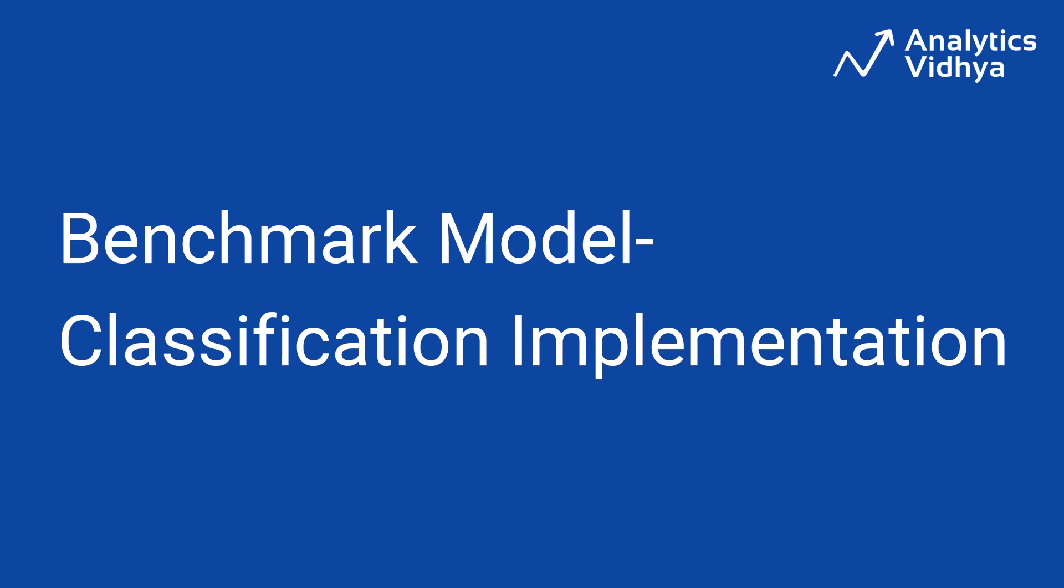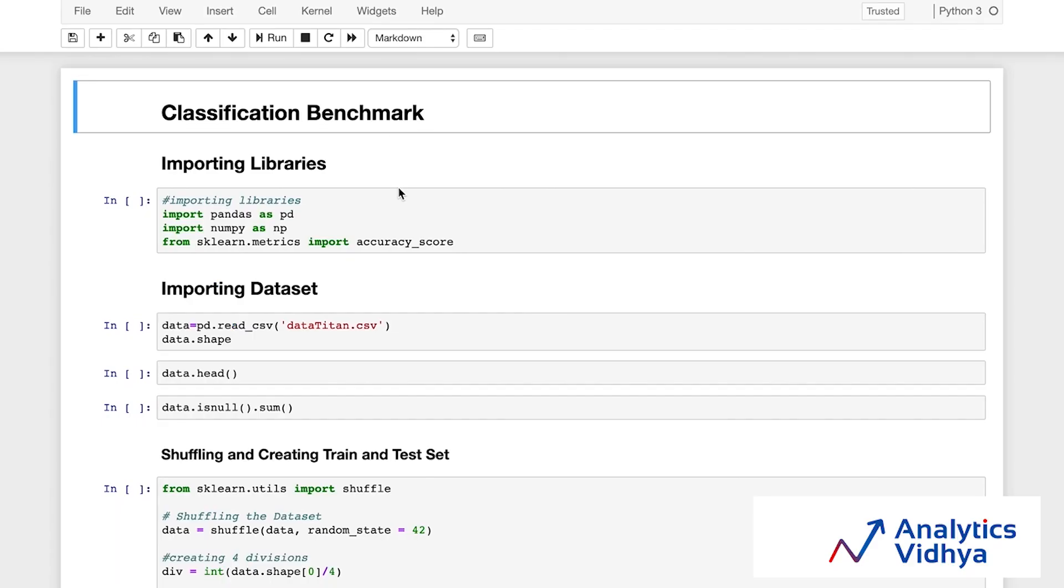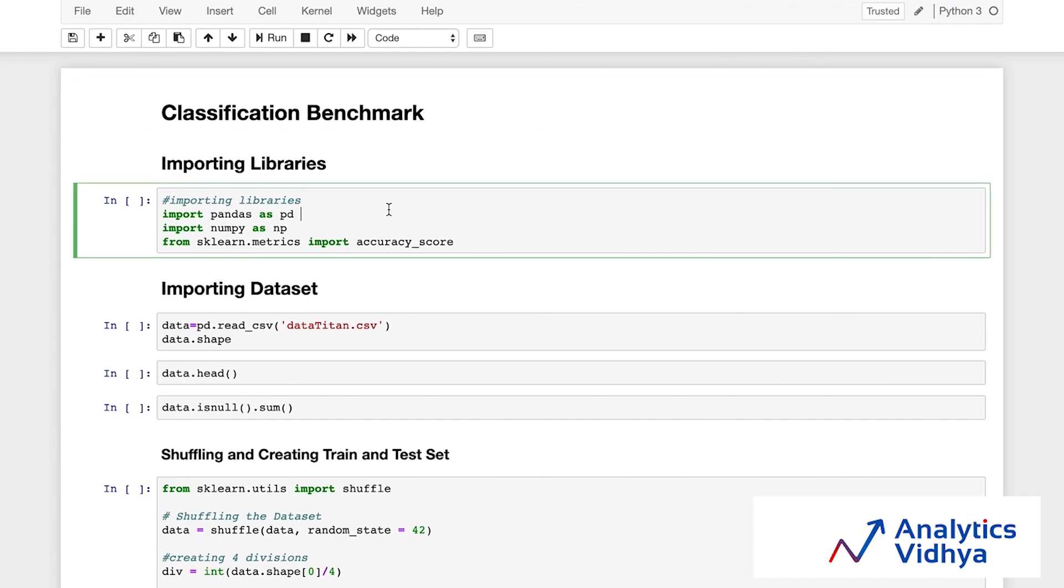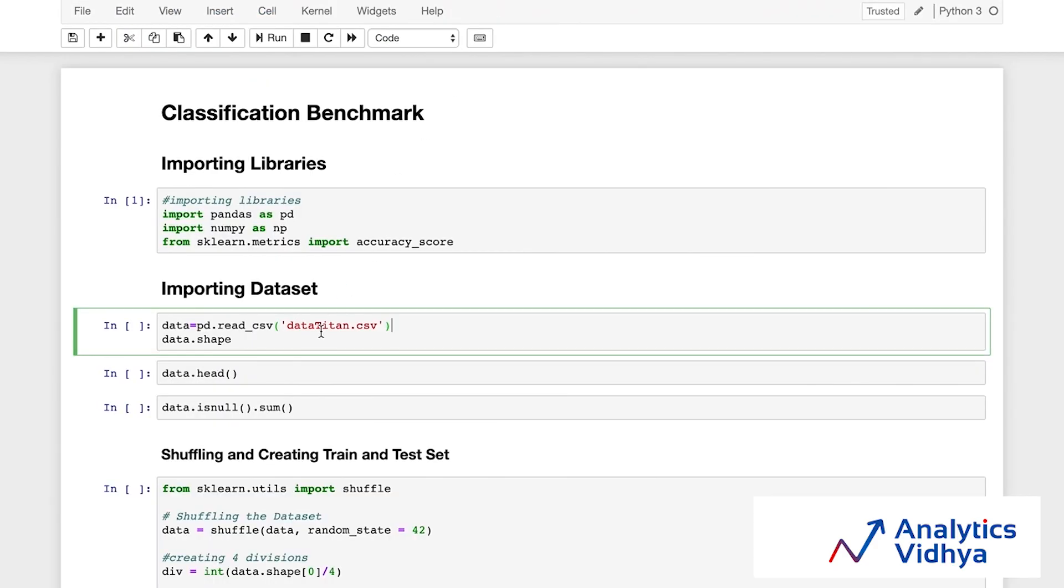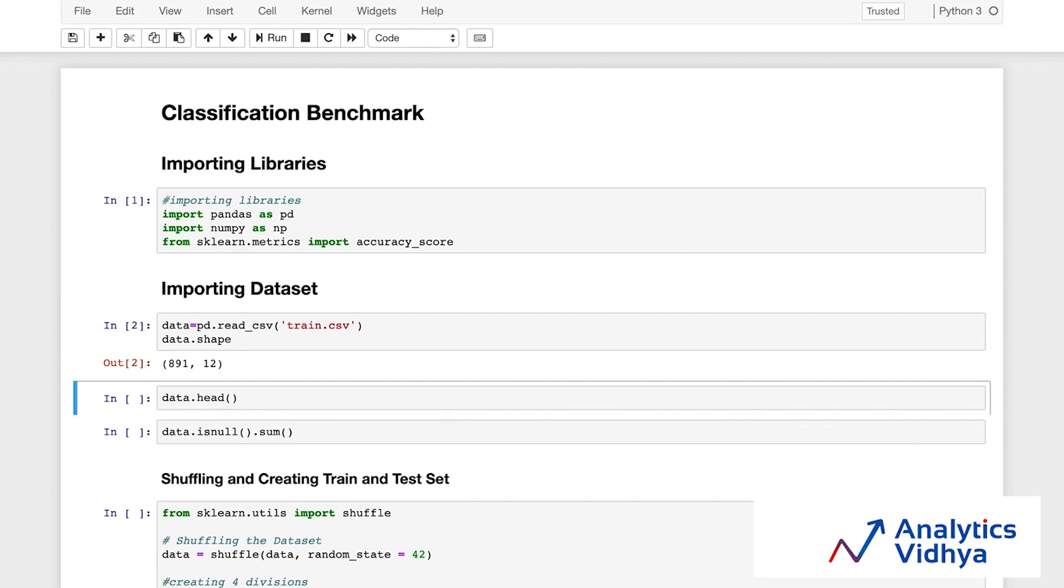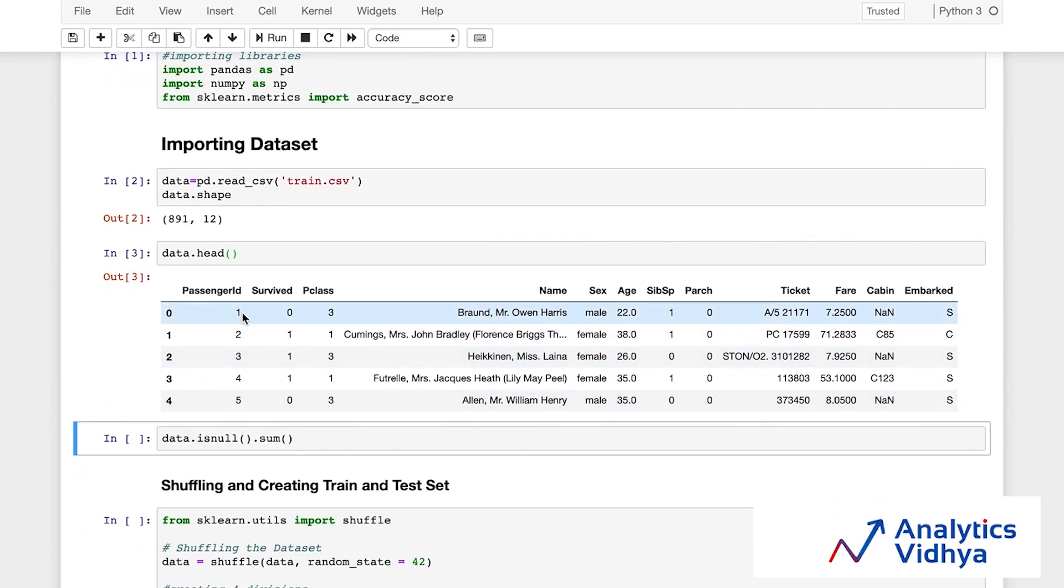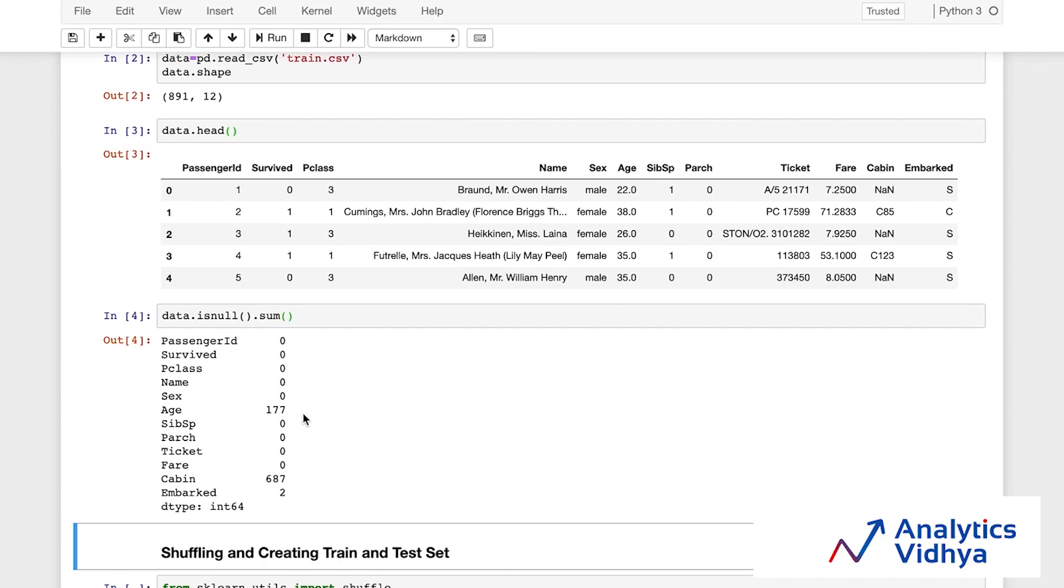We'll create a benchmark solution for a classification problem, which is the Titanic survival problem. Let's start by importing the standard libraries, which is pandas, numpy and sklearn and the dataset. The dataset is available in my same folder and it's named train.csv. I'll run the shape command. I have 891 rows and 12 columns. Let me look at the data to make sure this is the right data. There is passenger id, survived 0 or 1, which is the outcome, and then passenger class, name. This looks like the right data.